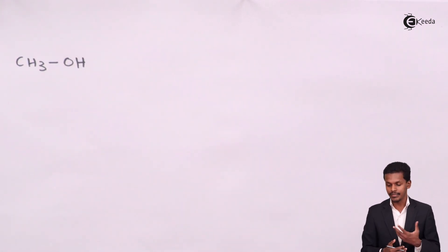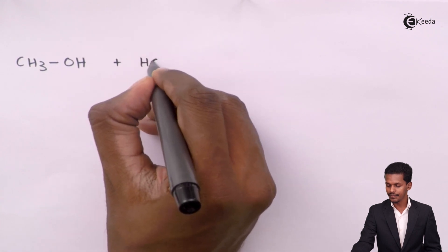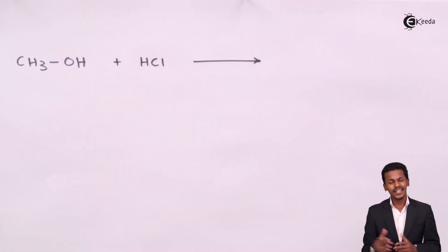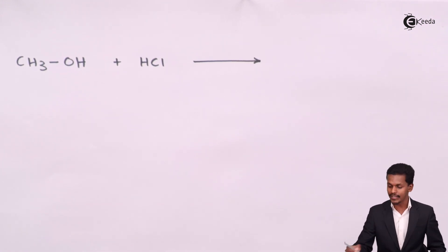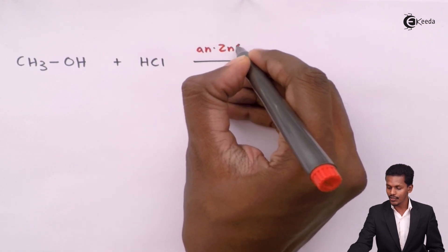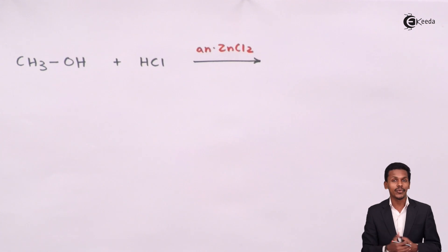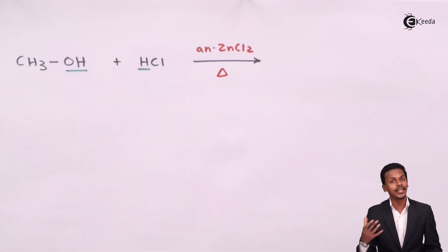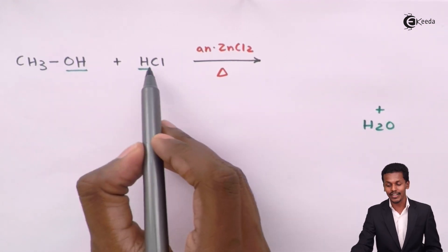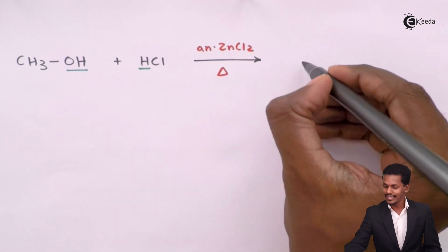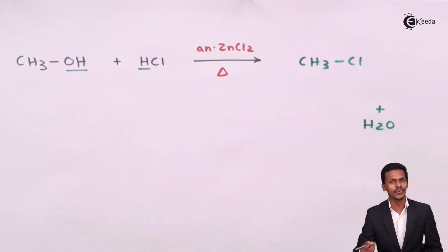For example, if we use methyl alcohol (a primary alcohol) and react it with HCl, this reaction doesn't take place on its own. We need to provide anhydrous ZnCl₂ along with sulfuric acid and heat. In this case, the H from HCl and the OH group from the alcohol are removed as H₂O, and we get CH₃Cl, known as methyl chloride or chloromethane.